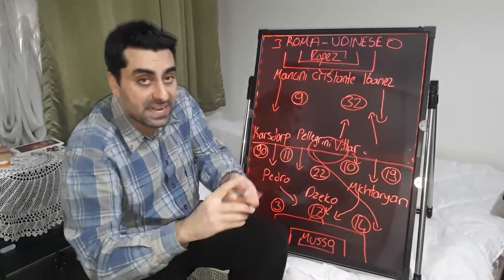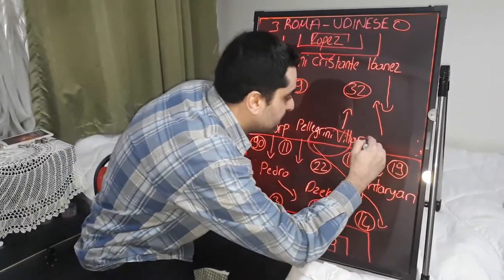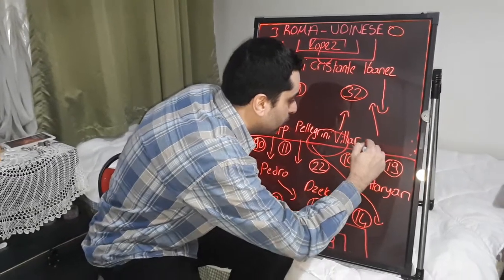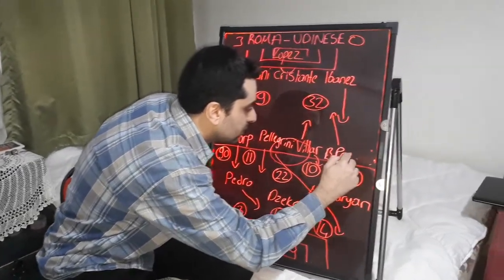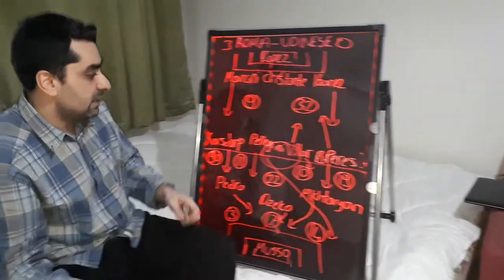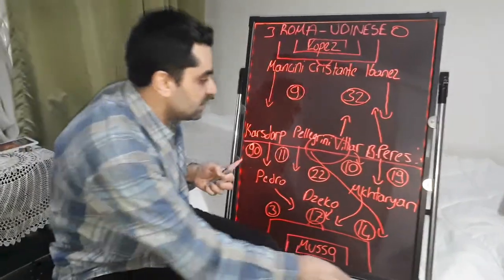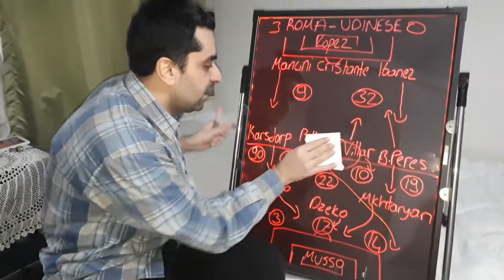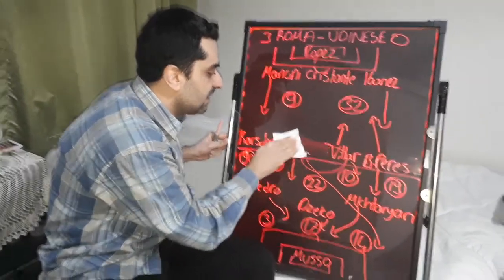Bruno Perez replaced Spinazzola and played on the left wing. Then the last substitution: Lorenzo Pellegrini came off and Diawara came on.